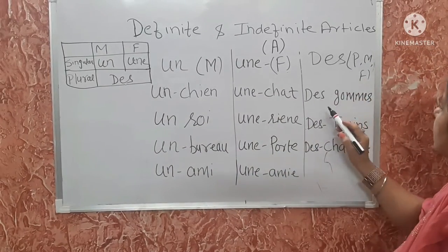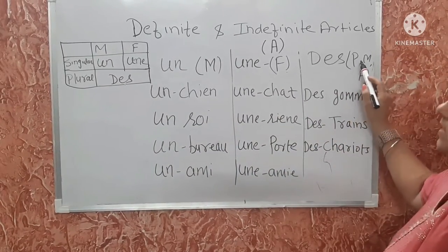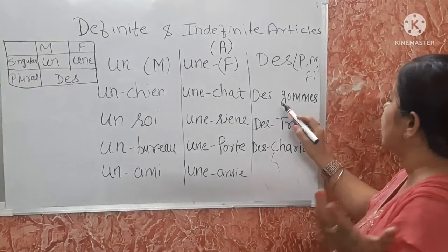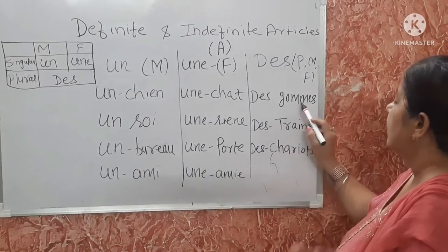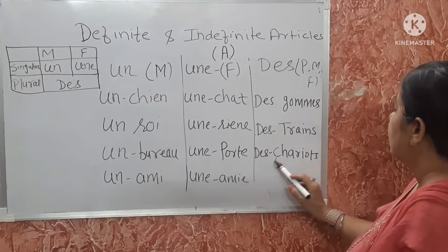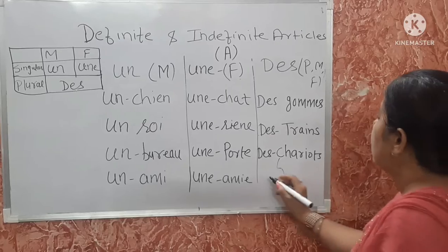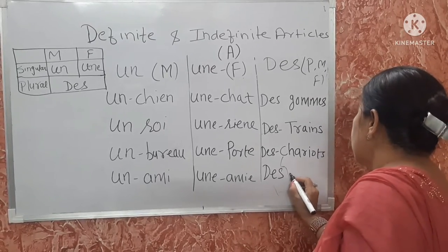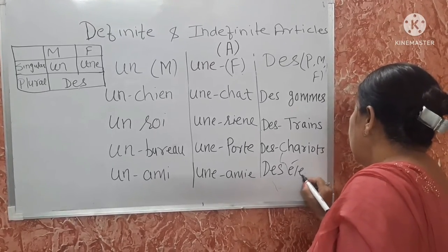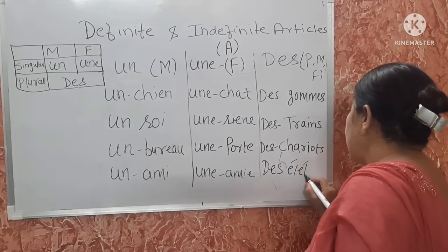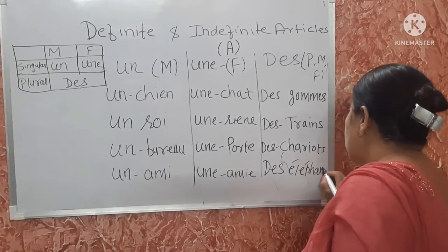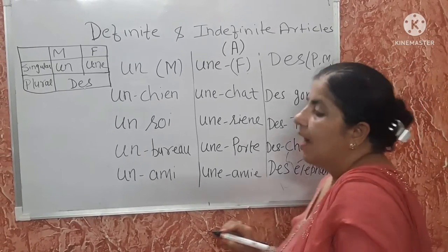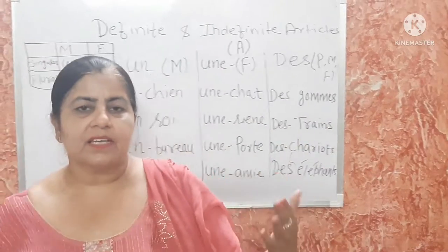Des is used with plurals, for both masculine as well as feminine. For example: 'des hommes' — men. 'Des trains' — trains. 'Des chariots' — carts. 'Des éléphants' — elephants.